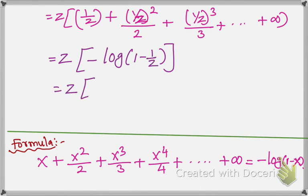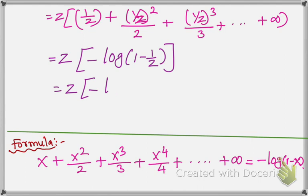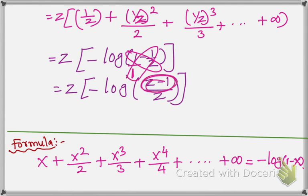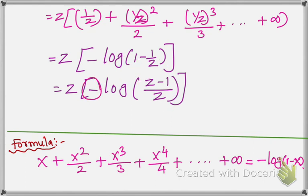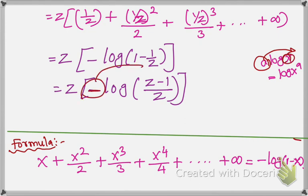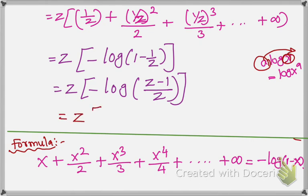We can apply the formula: minus log of (1 minus x) equals x plus x squared over 2 plus x cubed over 3, up to infinity. With x equal to 1 over C, we get C times minus log of (1 minus 1 over C). Taking LCM on both sides: C times log of (C minus 1) over C. Then applying the log property a·log(x) equals log(x to the power a), the minus 1 goes to the power, giving C times log of (C minus 1 over C) to the power minus 1.